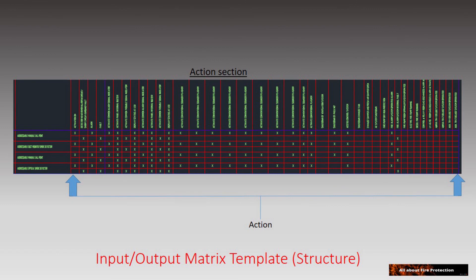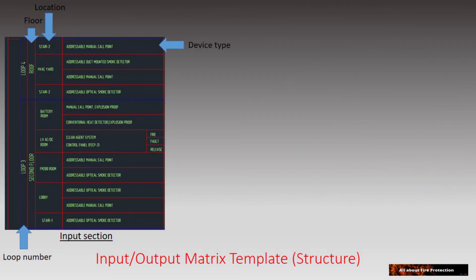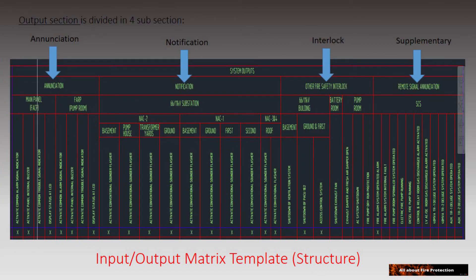The input section is divided into four subsections: loop number, floor, location, and device type. The output section is also divided into four subsections: annunciation, notification, interlock, and supplementary.